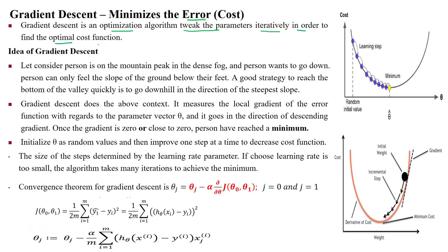The intuition behind gradient descent is: consider a person standing on a mountain peak. There is dense fog, and he wants to get down into the downhill. The person can feel the slope of the ground below their feet — only within about 10, 100, or 200 feet. Beyond that he is unable to see because of the dense fog. A good strategy to reach the bottom of the valley quickly is to go downhill in the direction of the steepest slope.